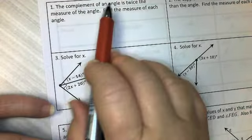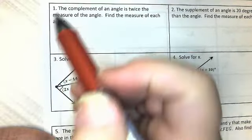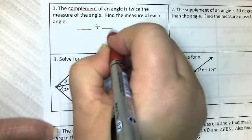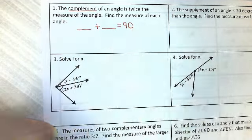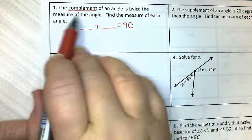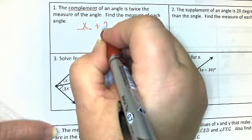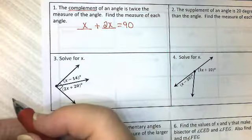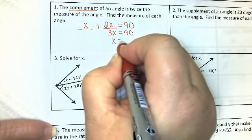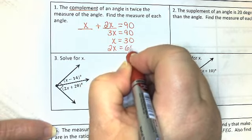The complement of an angle is twice the measure of the angle. Find the measure of each angle. As soon as I hear that angles are complementary of each other, the first thing I'm going to do is write blank plus blank equals 90. There's two angles involved. It says one angle is twice the measure of the other. So I'm going to call one of them x and the other one 2x. And then we'll solve our equation and find out that one of the angles was 30 and the other angle was 60.